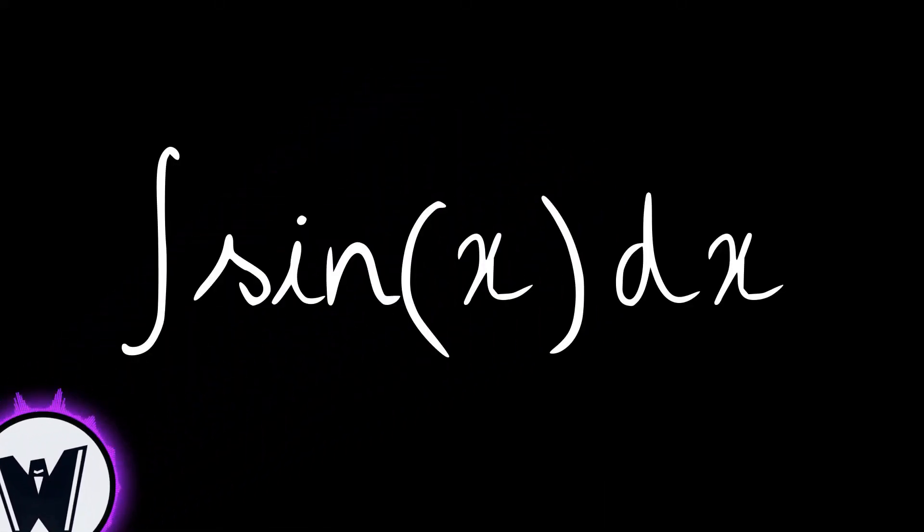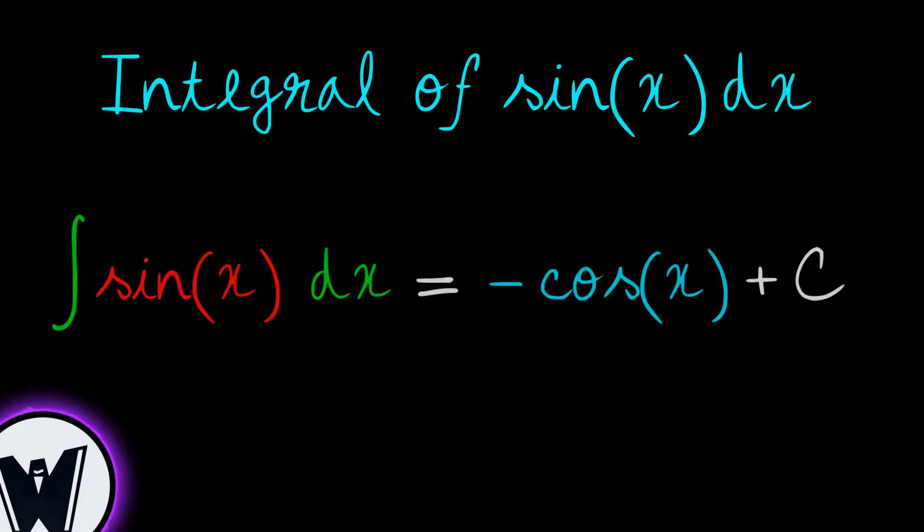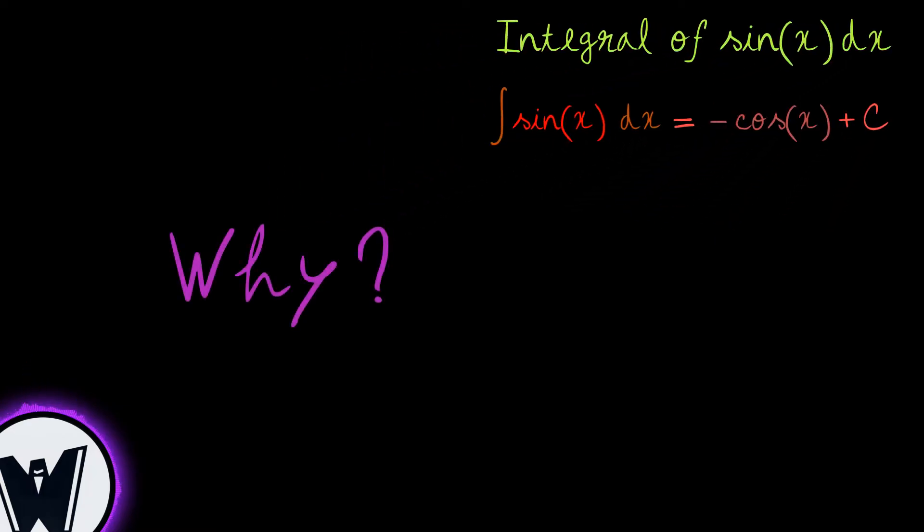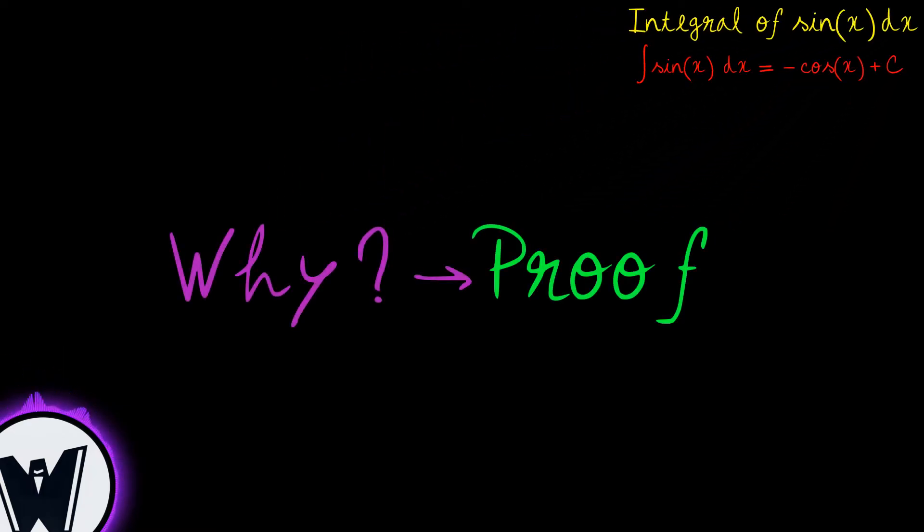The indefinite integral of sine of x. The result of the indefinite integral of sine of x is simply negative cosine of x plus the constant of integration. But why? Let's see some proofs of this statement.